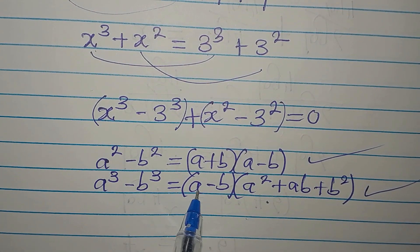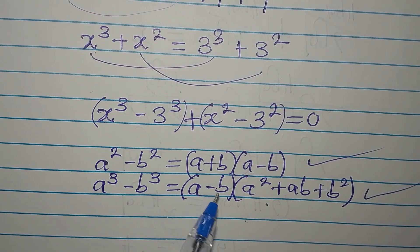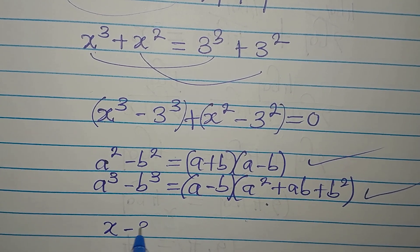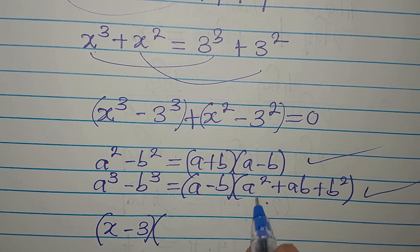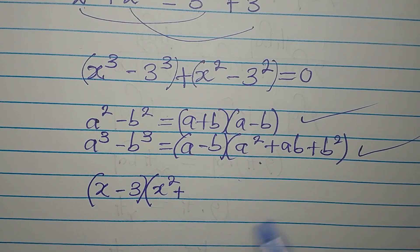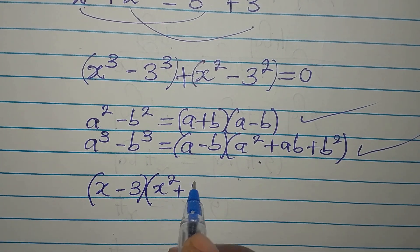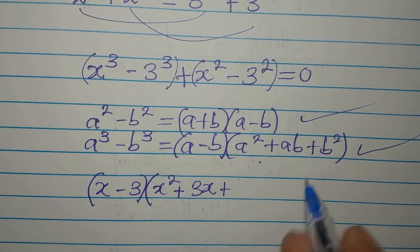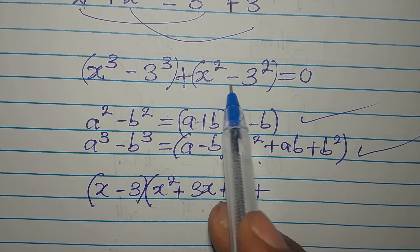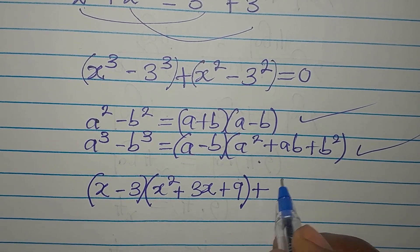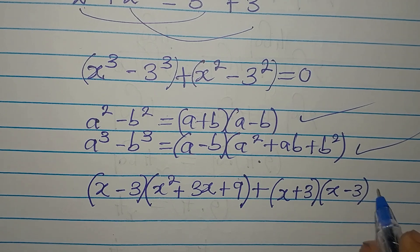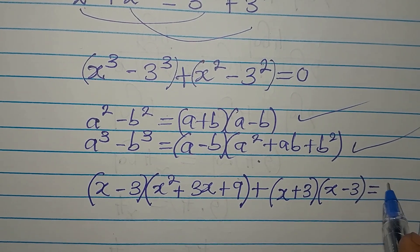Here x is our a and 3 is our b. So applying the difference of two cubes: (x - 3)(x² + 3x + 9). Then for the difference of two squares part, we get (x + 3)(x - 3). There's nothing on the right side, so we equate to zero.